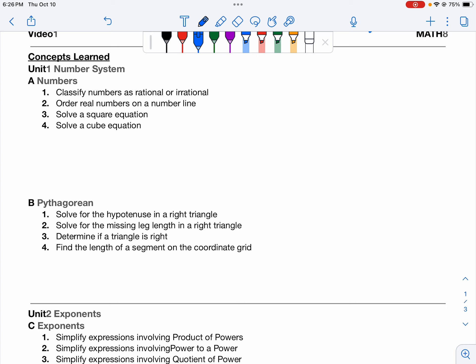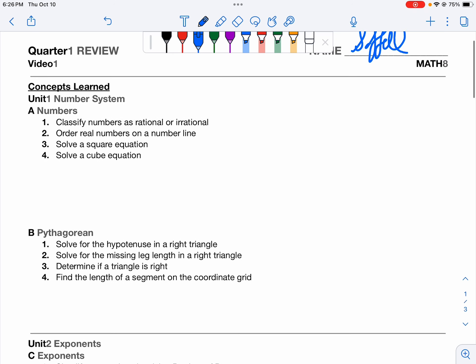So let's go ahead and talk about what we learned about. Classifying numbers as rational or irrational, ordering numbers on a number line, solving a square equation, and solving a cube equation. So rational versus irrational. Rational is any whole fraction or decimal that repeats or terminates.